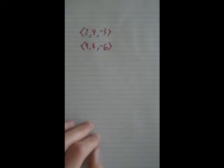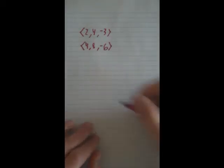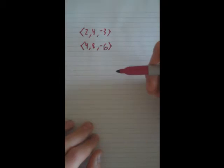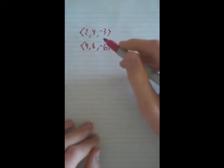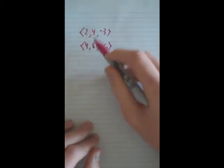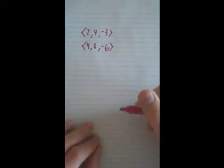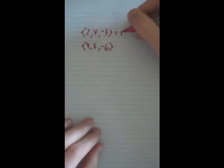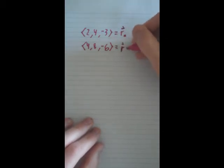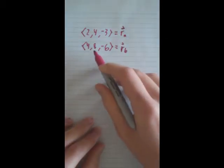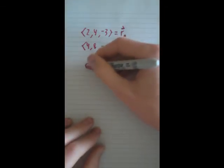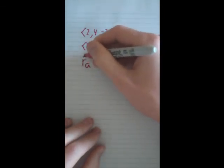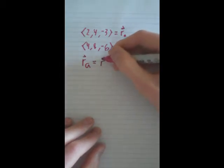First of all, an easy way of looking at this is you can clearly see that this one is this one divided by 2. So we'll call this R_A, and we'll call this one R_B. We know that R_A is R_B divided by 2.